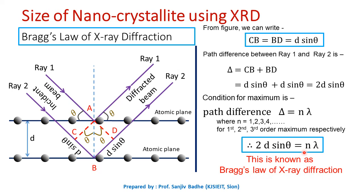So according to this Bragg's law of X-ray diffraction, we will get maximum for a particular angle theta. This angle theta is also called as Bragg angle.